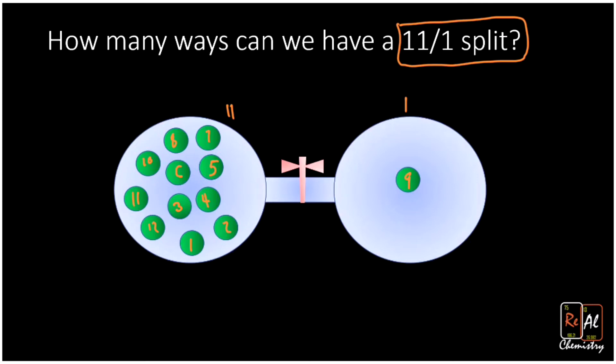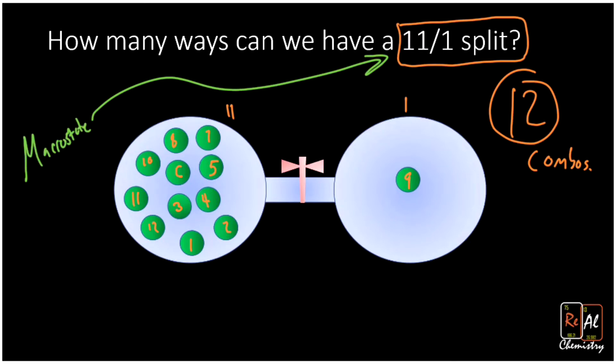Well, that's one way I could have that setup, or I could switch out the 9 for the 2 or switch out the 2 for the 7. And how many different possible ways are there? 12, because I could have any number 1 through 12 there on the right side. So 12 combinations. It turns out that this 11-1 split is what's called a macrostate. It's an arrangement for our system where I can tell the difference, so it's distinguishable.